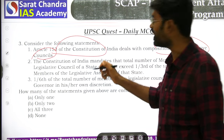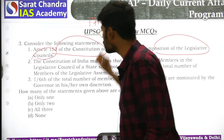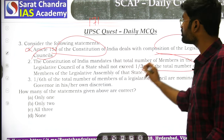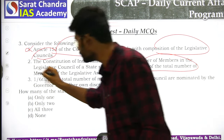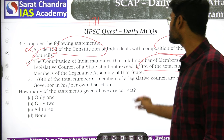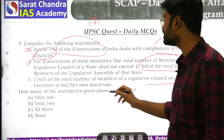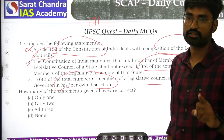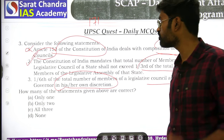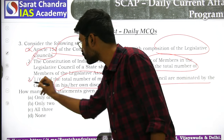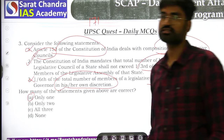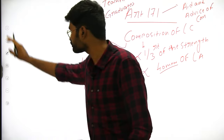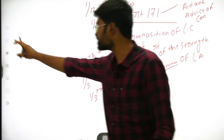Looking at the statements: Article 153 is incorrect — it should be Article 171. The statement about one third of total seats relating to the legislative assembly is correct. However, the statement that one sixth of the legislative council are nominated by the governor in his or her own discretion is wrong — it requires aid and advice of the Council of Ministers. So only one statement is correct here.